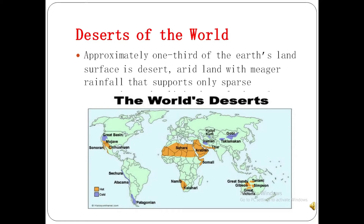Next are the deserts of the world. Almost one third of the earth's land is covered with desert — arid land with meagre rainfall that supports only sparse vegetation. In this diagram you can see two types of desert: hot deserts shown in a brownish color and cold deserts shown in blue. The largest desert is the Sahara desert, which is a hot desert and the world's largest.